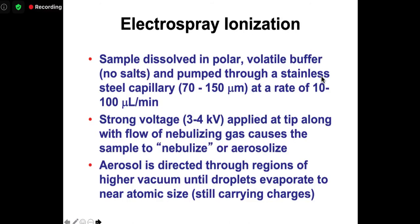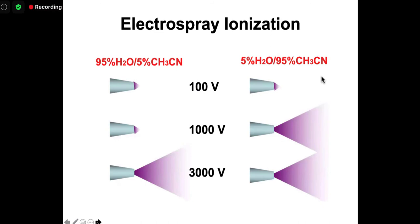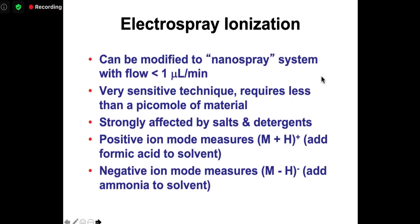For electrospray, you have to have something that's usually a fairly volatile buffer — no salts. You pump it through a capillary at a relatively low rate of microliters per minute, apply a really strong voltage to the aerosol nebulizer, and as things evaporate, these tiny droplets still carry charges. You can play around with the voltage to enhance the spraying, and also adjust the viscosity of the solvent. You can change the mode from positive ions to negative ions, depending on the solvent you're using or mixing with your LC system.